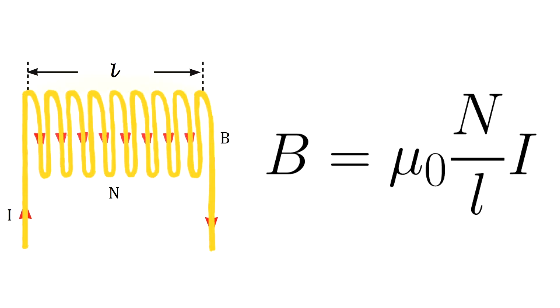The magnitude of the magnetic field in the interior region of a solenoid is calculated using this relationship. Here, μ₀ is a constant called permeability of free space, N is the number of turns, l is the length of the solenoid, and I is the current in the solenoid.